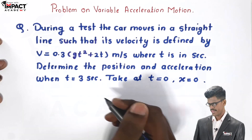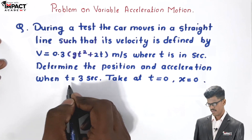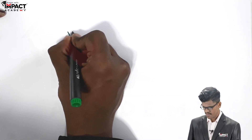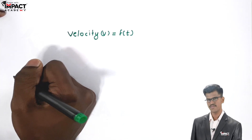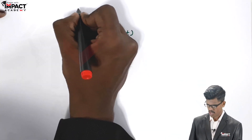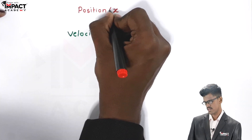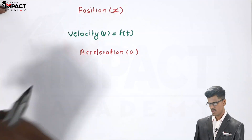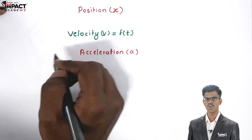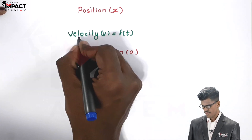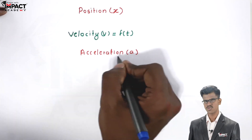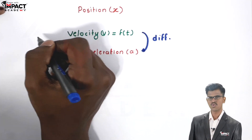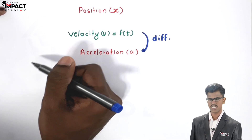In this problem they ask to calculate the position x and acceleration when t = 3 seconds. We know the velocity as a function of t. In our previous video we saw how to calculate acceleration from velocity and position from velocity. If we know the velocity and need acceleration, we simply differentiate. If we need position from velocity, we integrate.